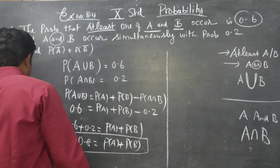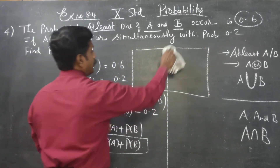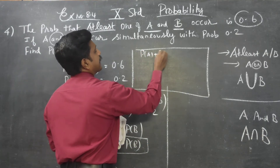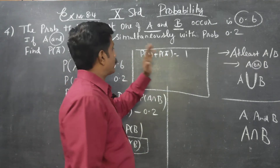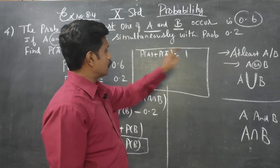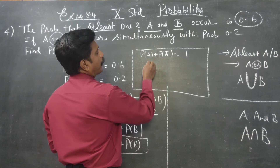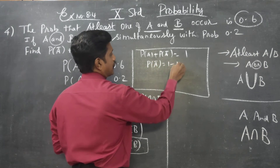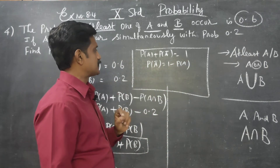A very well-known formula: probability of A plus probability of A dash is equal to 1. Therefore, probability of A dash is equal to 1 minus P of A, and probability of A is equal to 1 minus probability of A dash.